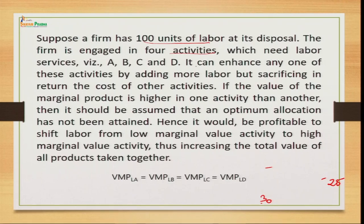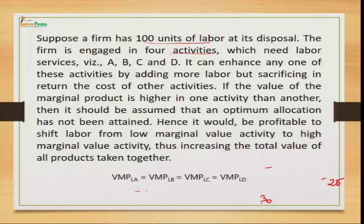Equi-marginal utility principle helps understand how to allocate resources. You can understand it from both the producer's perspective — allocating inputs to get equi-marginal productivity — and the consumer's perspective — allocating income among commodities to derive equi-marginal utility. We need to understand the requirement of each activity and allocate accordingly. The value of marginal productivity of activity A should equal that of activities B, C, and D.